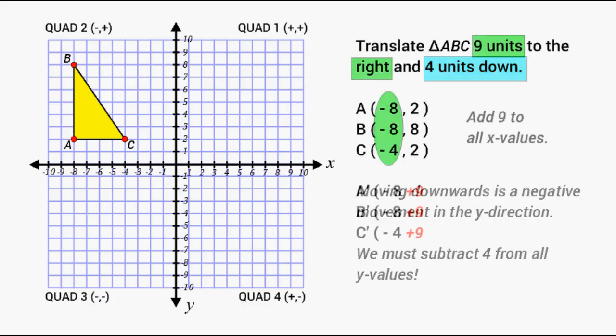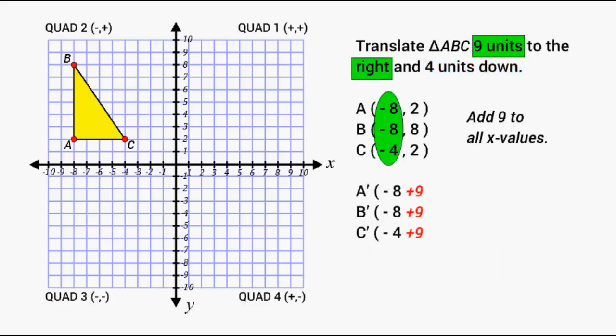So first let's add 9 to each x value. Negative 8 plus 9 is positive 1. Negative 8 plus 9 is also positive 1. And negative 4 plus 9 will result in positive 5.